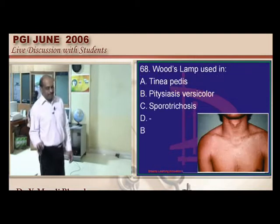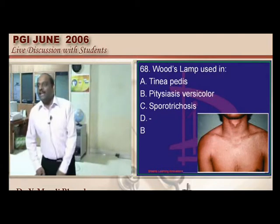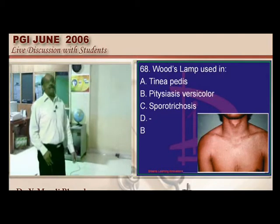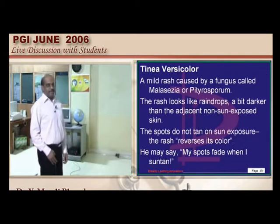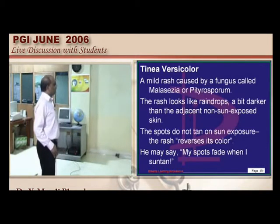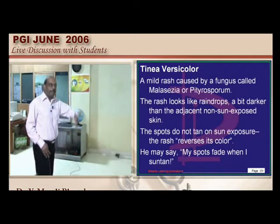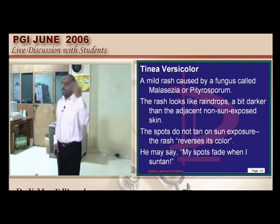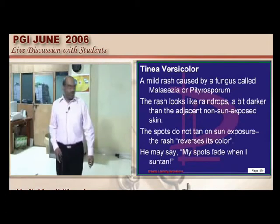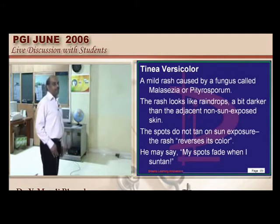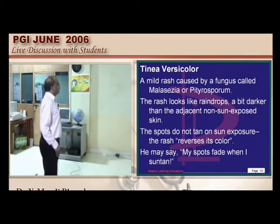Tinea versicolor is typically caused by Malassezia furfur, causing hypopigmented patches. When the patient goes into sunlight, the whole body tans but these hypopigmented patches do not tan. The spaghetti and meatball appearance is classic for tinea versicolor, and Wood's lamp examination can help detect it.